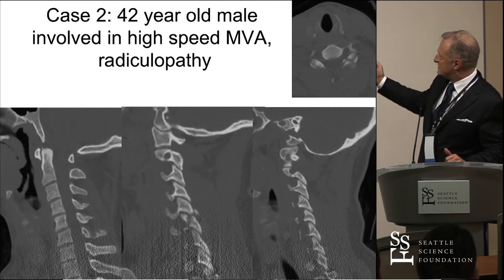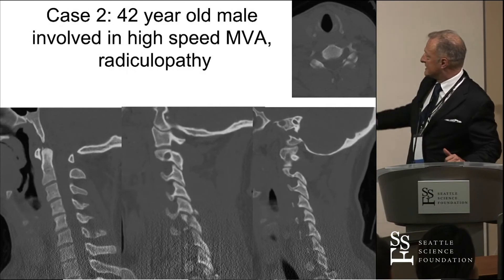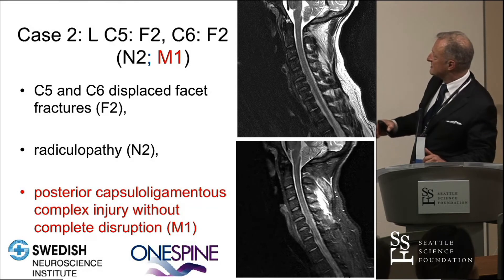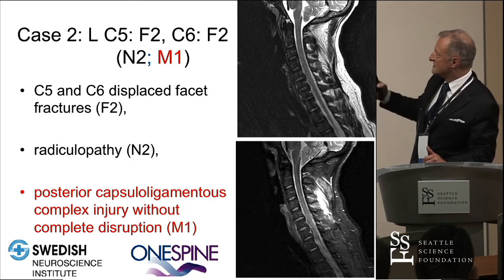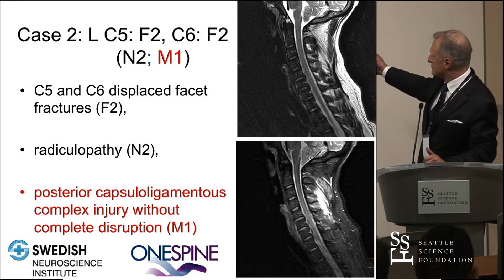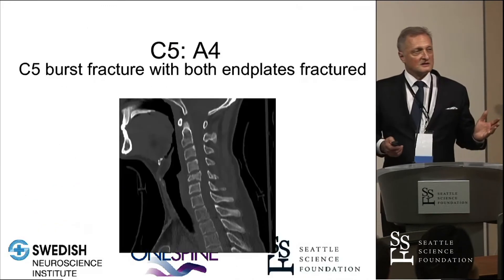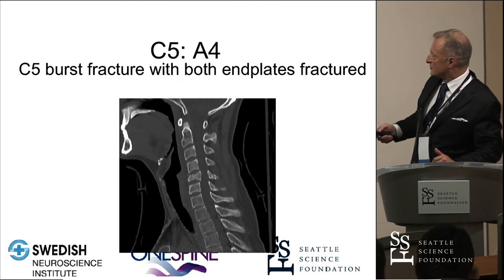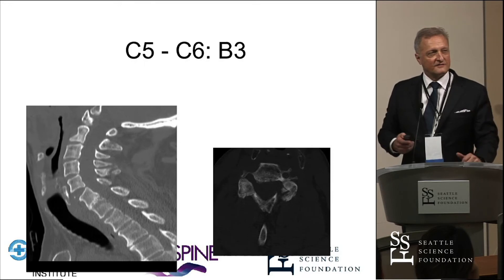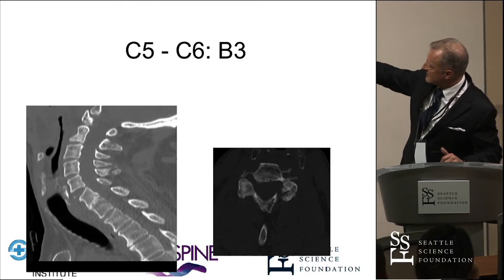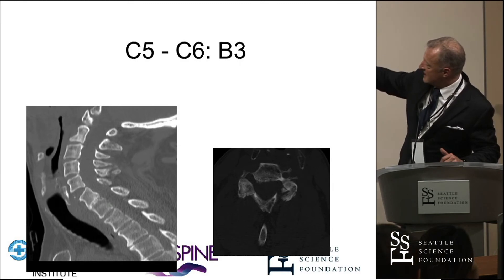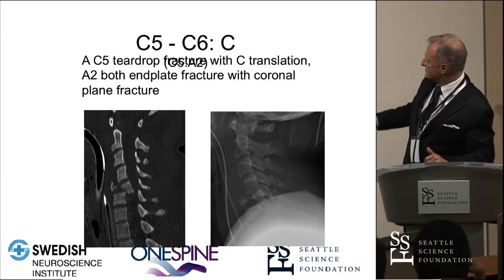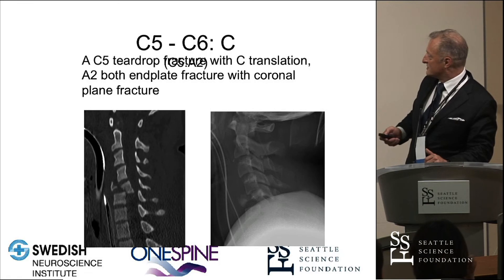Case two is a high-speed motor vehicle accident with radiculopathy. You can see some facet injuries here. At C5, there's an F2 injury involving more than 50% of the facet joint. At C6 we have an F2 injury as well, and there's neurology with an M1 injury, meaning there's a posterior ligamentous disruption as you can see here. At C5 we have an A4 injury — a burst fracture that involves both end plates and has disrupted the canal. At C5-6 this is a B3 injury with an anterior gap, showing a hyperextension-type injury. And finally, here we have a C injury — a severe disruption in both planes. It's a C5 teardrop injury.